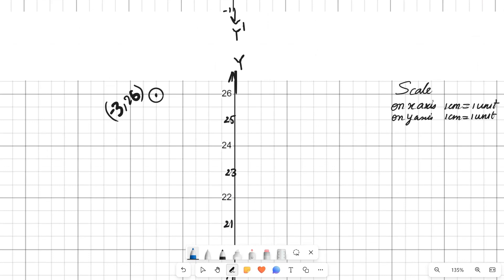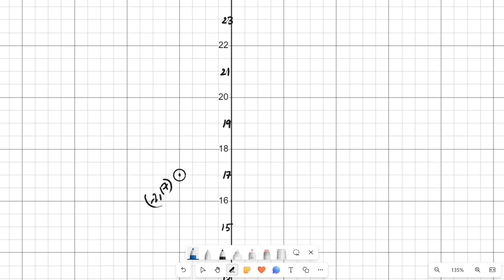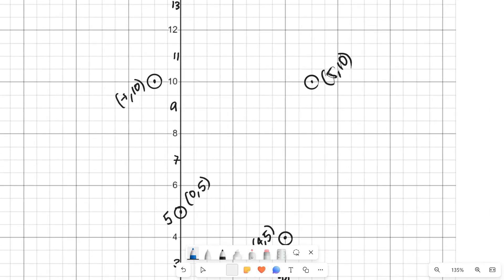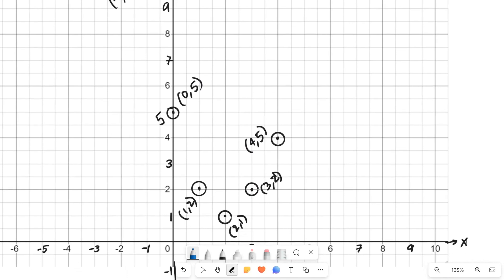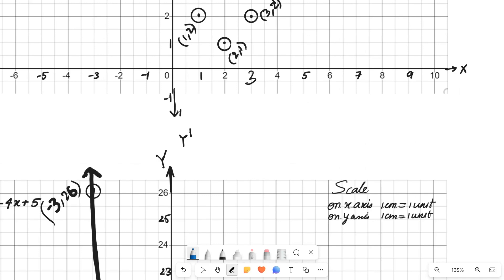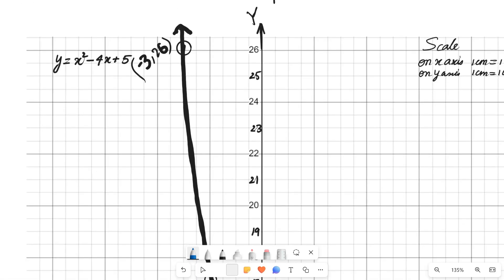the points whatever is found from the table we need to locate in the graph sheet: (-2, 17), (-1, 10), (0, 5), (1, 2), (2, 1), (3, 2), (4, 5) and (5, 10). And third step we need to join all these points without lifting our pencil.